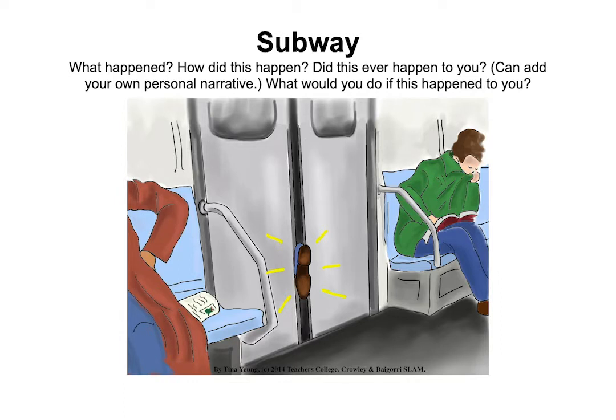The subway was the very first material I ever used — it was when I started evaluating again about 25 years ago. I couldn't get kids to engage in the way I wanted. I found a photo in the back of a Life magazine, modified it, and asked Tina Young to illustrate it. It's obviously a shoe stuck between two subway doors. The questions ask: 'What happened? How did this happen?' — that's expository language. 'Did this ever happen to you?' — looking for a personal narrative. 'What would you do if this happened to you?' — making meaningful predictions.